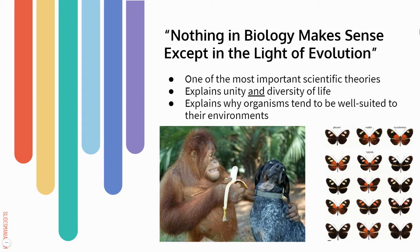Evolution and natural selection can explain both the unity and diversity of life. So why is it that this ape and this dog, and for that matter this banana and the trees behind them, why do they all share the same genetic code? And also, if you're thinking about any sort of organism, there are so many different forms that organism can take. So where does all this diversity come from? Evolution also explains why organisms tend to be well-suited to their environments — why they have characteristics that help them in the environments in which they live.